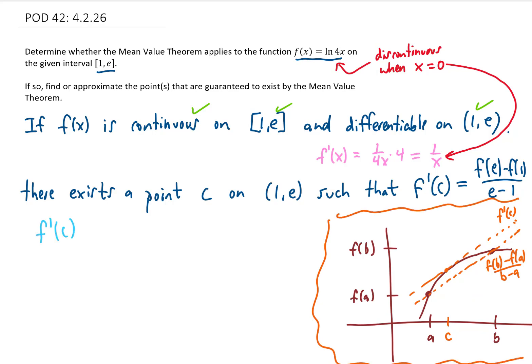The mean value theorem tells us that there exists a c such that this equation is true. We found f prime of x earlier. If we plug c in for x, we get that f prime of c is 1 over c.